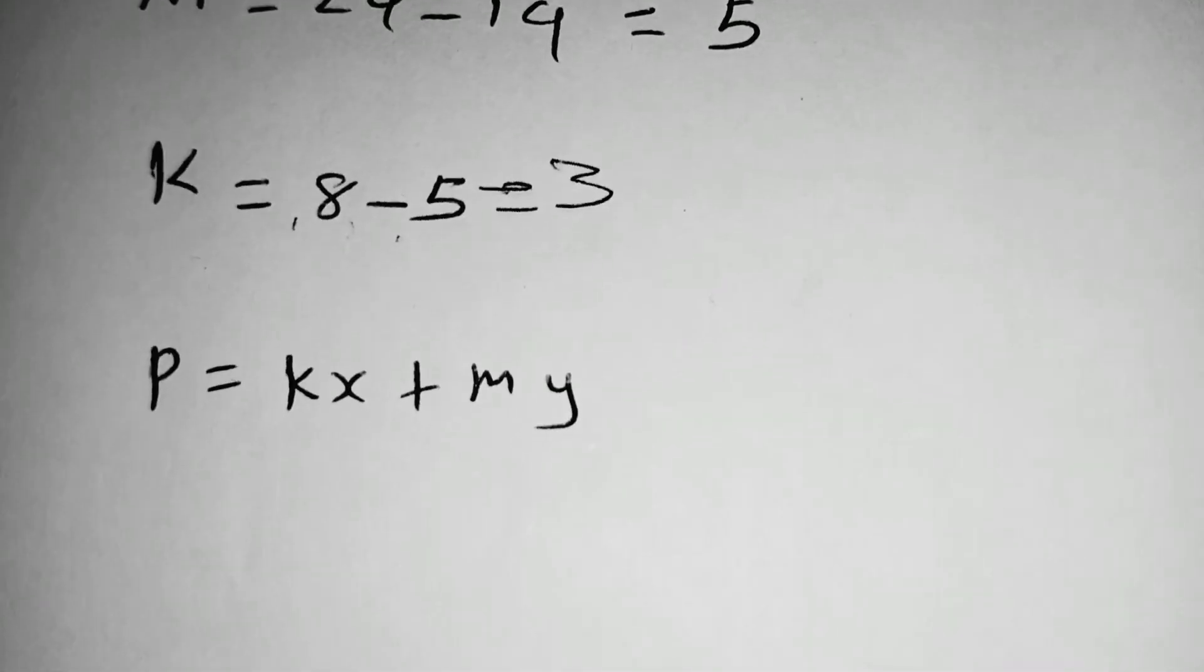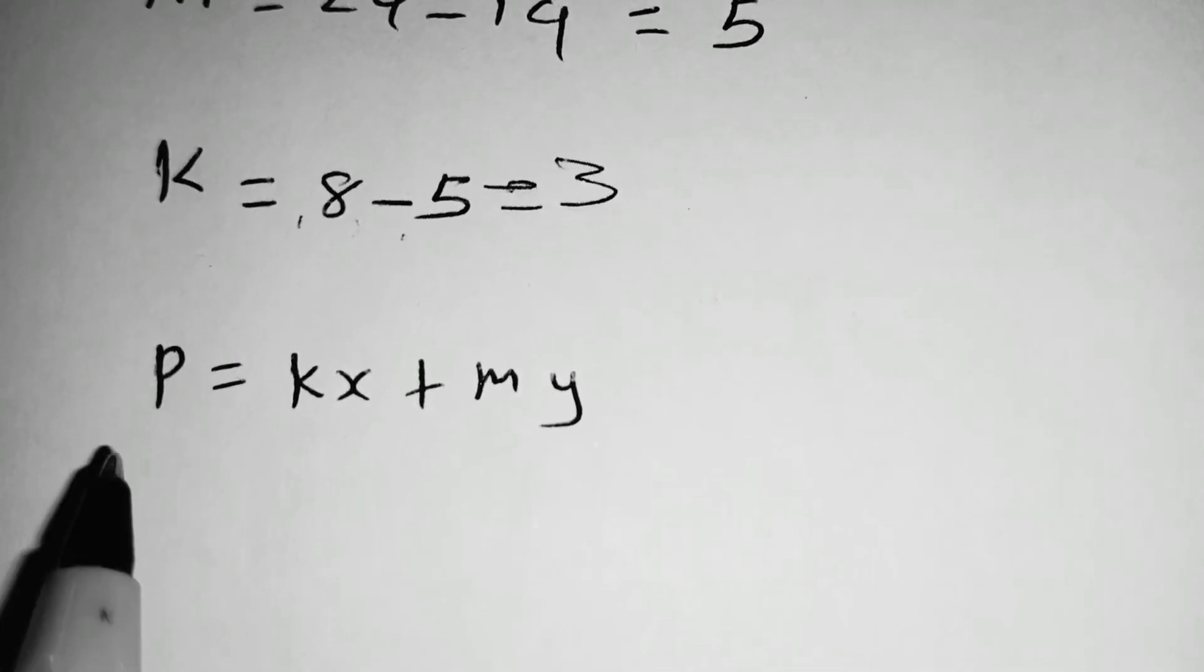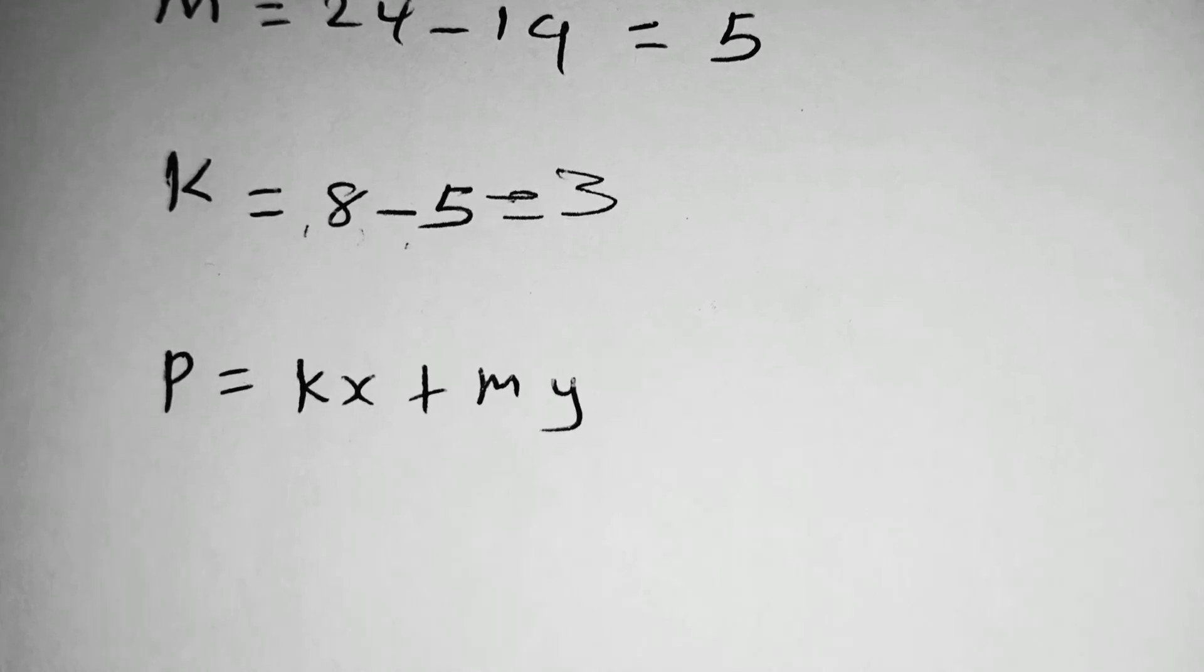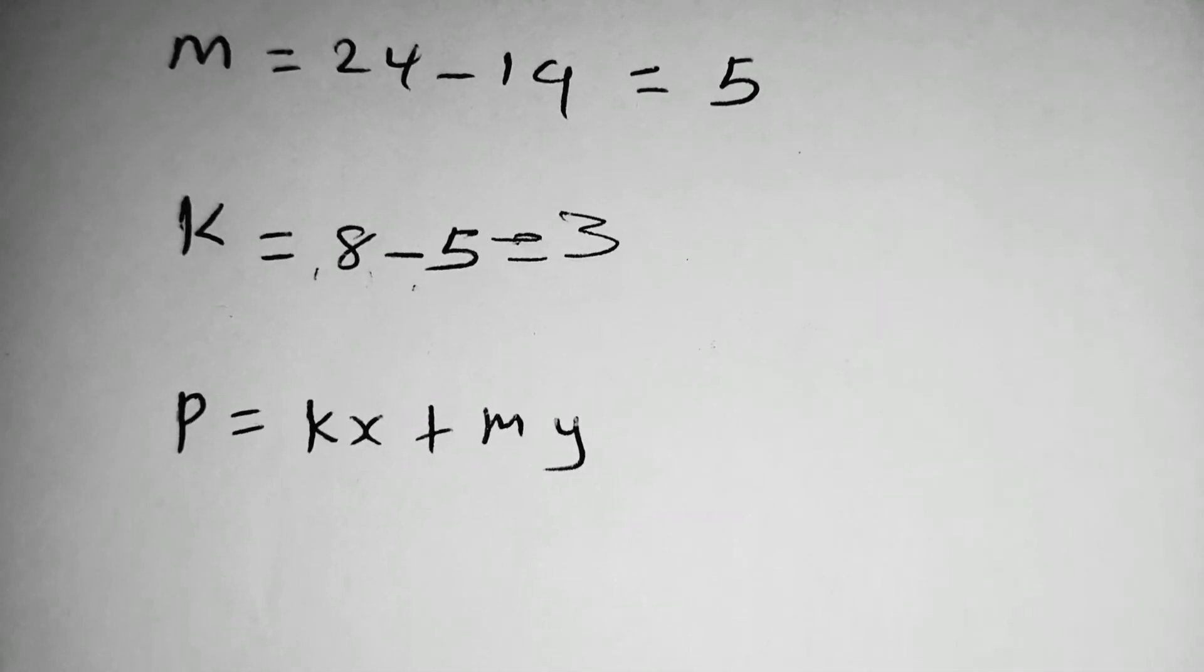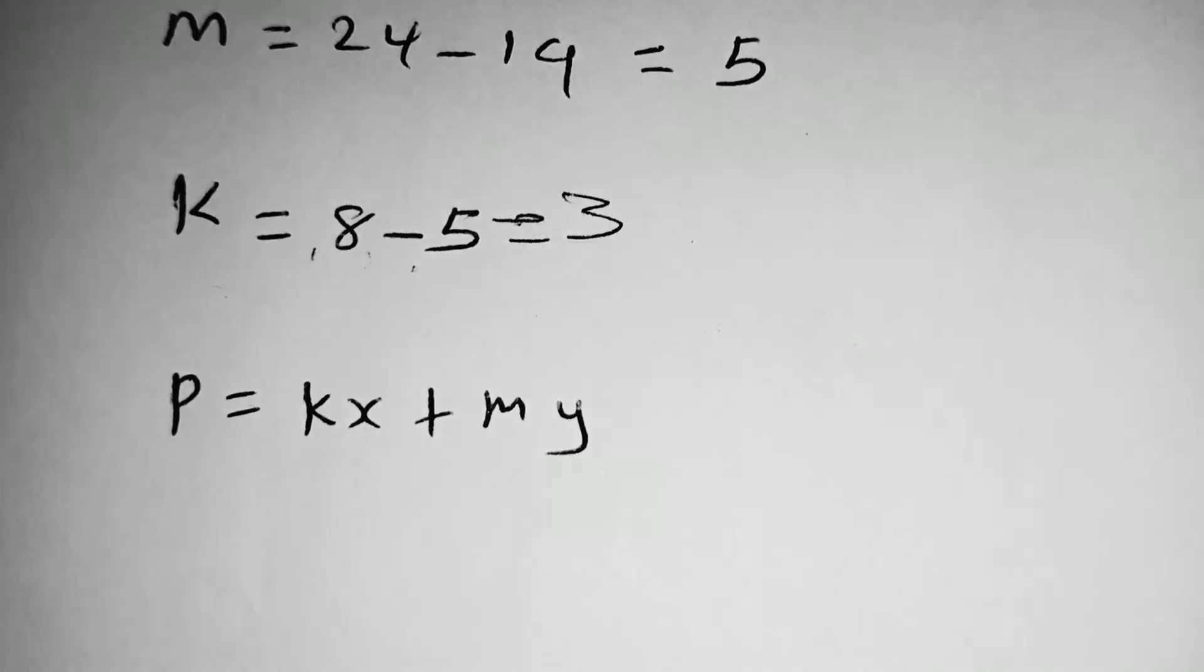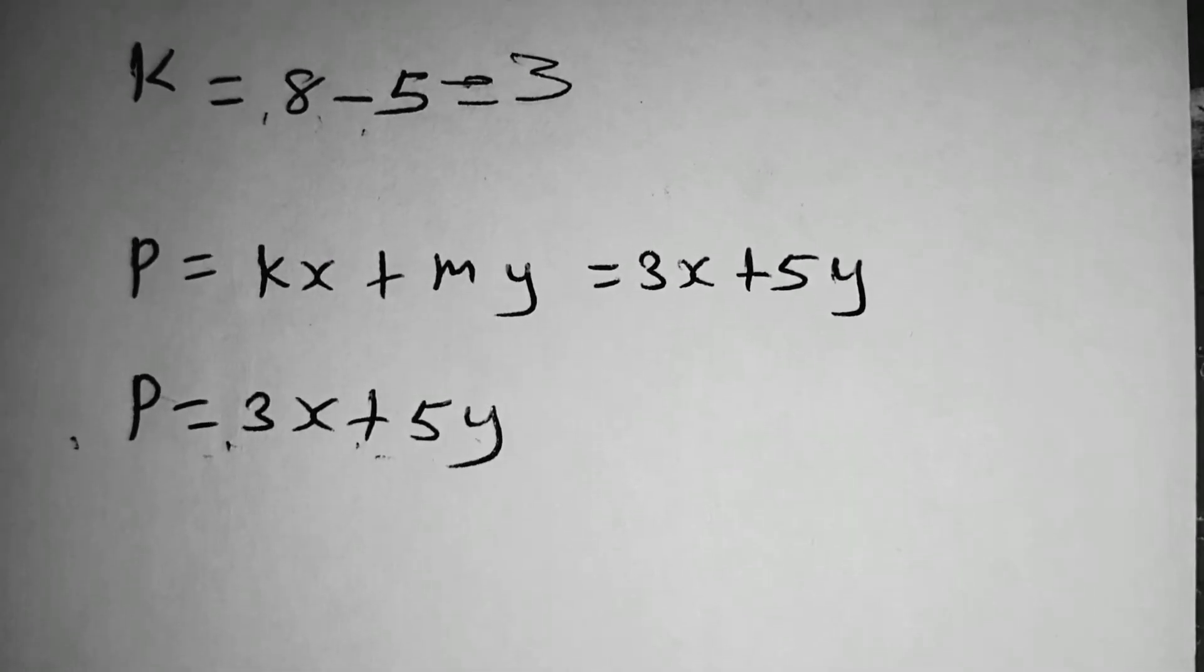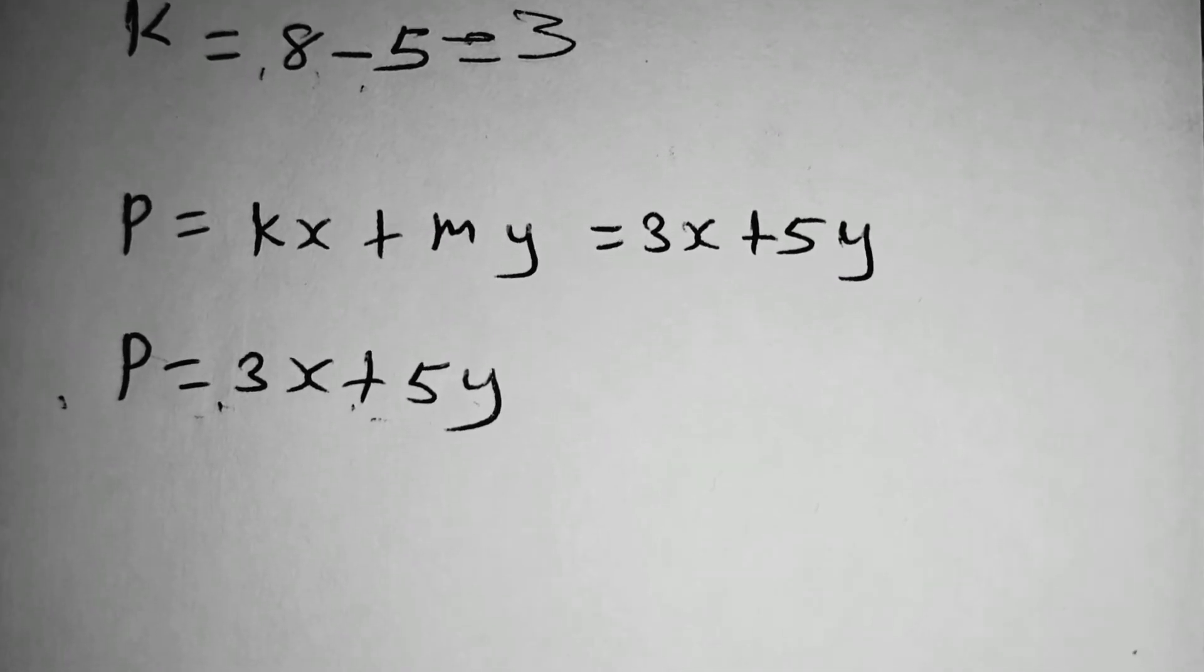The equation connecting P, X and Y is this: P is equal to KX plus MY. Then, we substitute the values of K, K is 3, M is 5, so that now we obtain our equation as P is equal to 3X plus 5Y. And we have answered the first part, that is the equation connecting P.